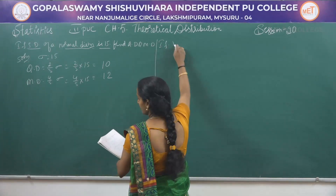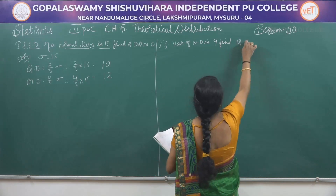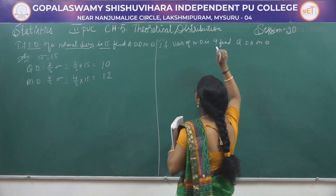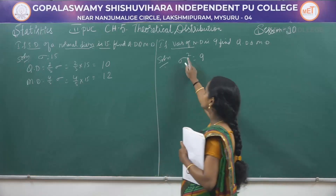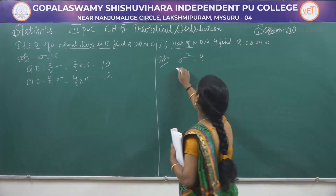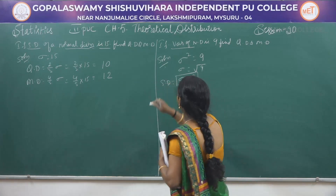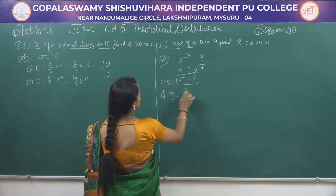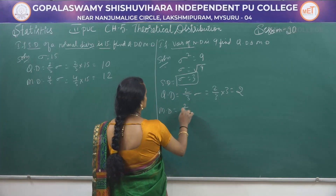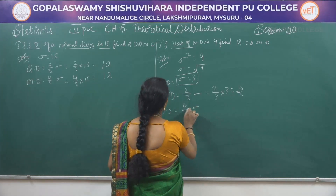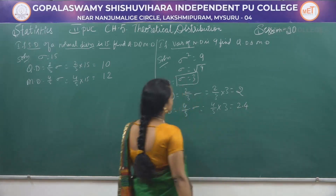Next problem: If the variance of a normal distribution is 9, find quartile deviation and mean deviation. Here, σ² = 9, so σ = √9 = 3. Quartile deviation = (2/3)σ = (2/3) × 3 = 2. Mean deviation = (4/5)σ = (4/5) × 3 = 2.4.